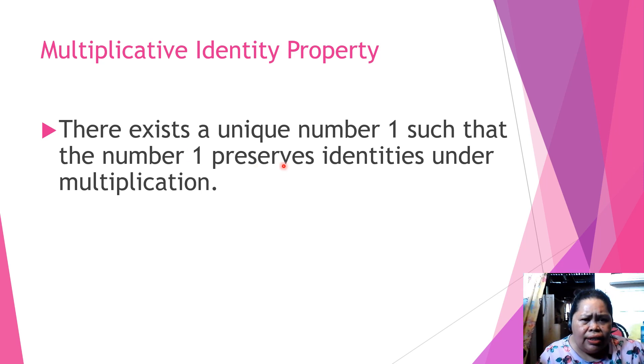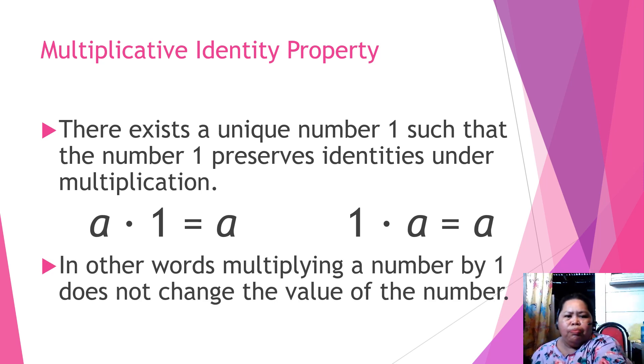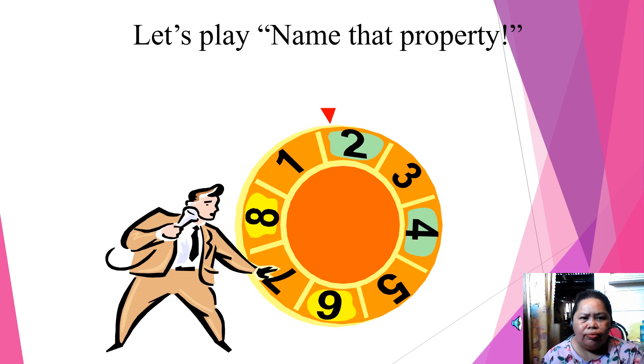What about the multiplicative identity property? There exists a unique number 1, such that the number 1 preserves identities under multiplication. Any number that is multiplied by 1 is the number itself. A times 1 is equal to A, and 1 times A is equal to A. In other words, multiplying numbers by 1 does not change the value of the given number.